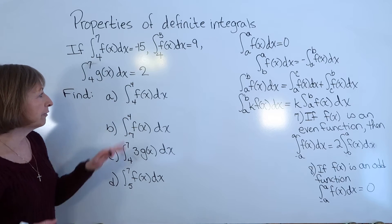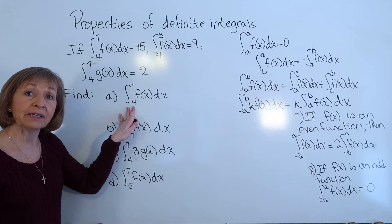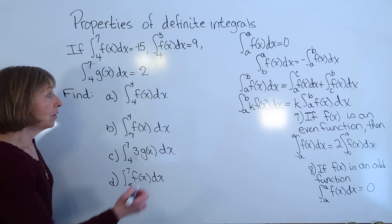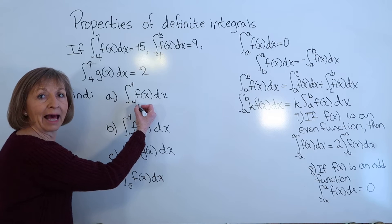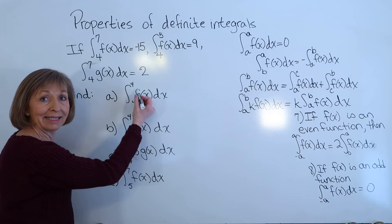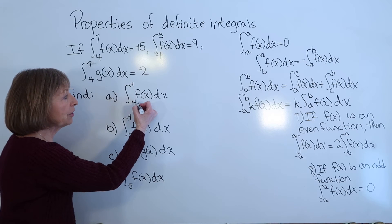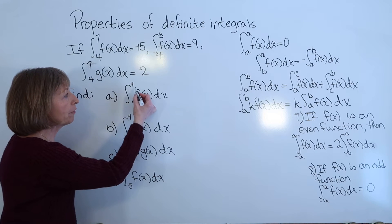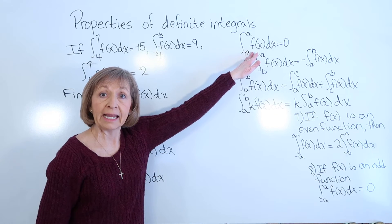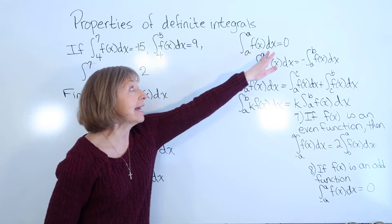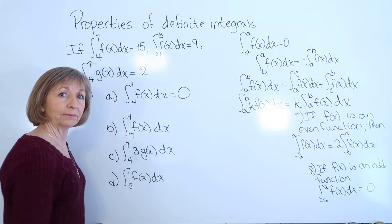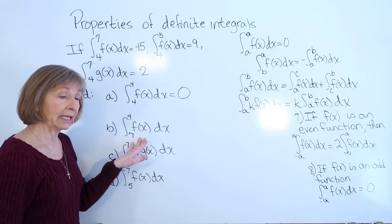Part A asks for the definite integral from 4 to 4 of f of x dx. The lower and upper limits of integration are both 4 — the same value. This fits Property 1: the integral from a to a of f of x dx equals zero. So the answer is zero.